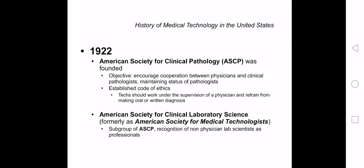In 1922, the American Society for Clinical Pathology (ASCP) was founded with the objective of encouraging cooperation between physicians and clinical pathologists, as well as maintaining the status of clinical pathologists. They also established a code of ethics for technicians and technologists, stating that these allied health professionals should work under the supervision of a physician and refrain from making oral or written diagnoses and advising physicians on how patients should be treated.